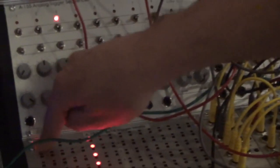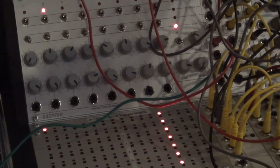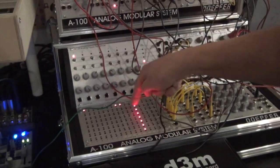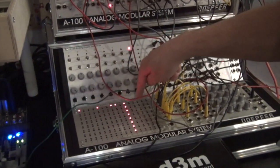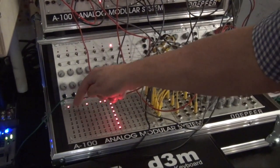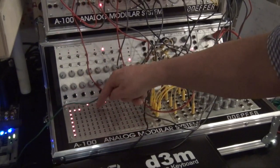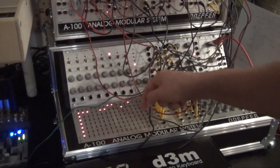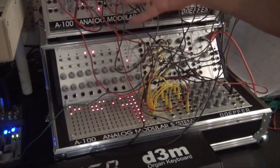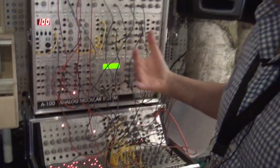For example, this is a sampler which is triggered. You can define the positions where the trigger comes out. The second is a noise signal, and this is also noise. So you can very easily program rhythmic sequences.